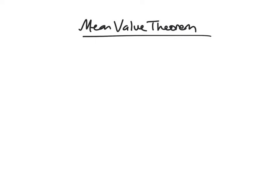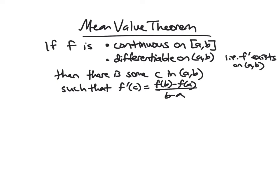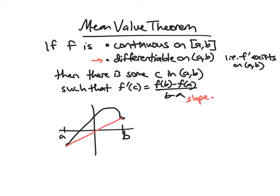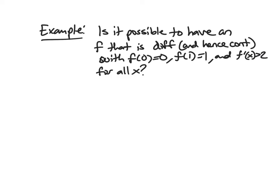Now that we have the basic idea, a picture, and a real-world example, we're ready to give the formal statement. If f is continuous on a closed interval — same as the Extreme and Intermediate Value Theorems — and also differentiable on the open interval (we don't worry about differentiability at the endpoints), then there is some point C in that interval where f prime of C equals f of b minus f of a over b minus a. That is, the instantaneous rate of change equals the average rate of change somewhere.